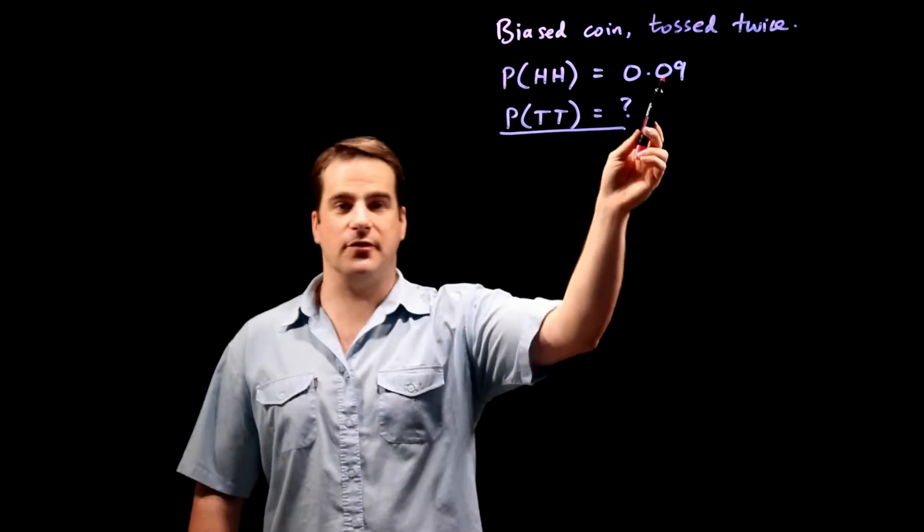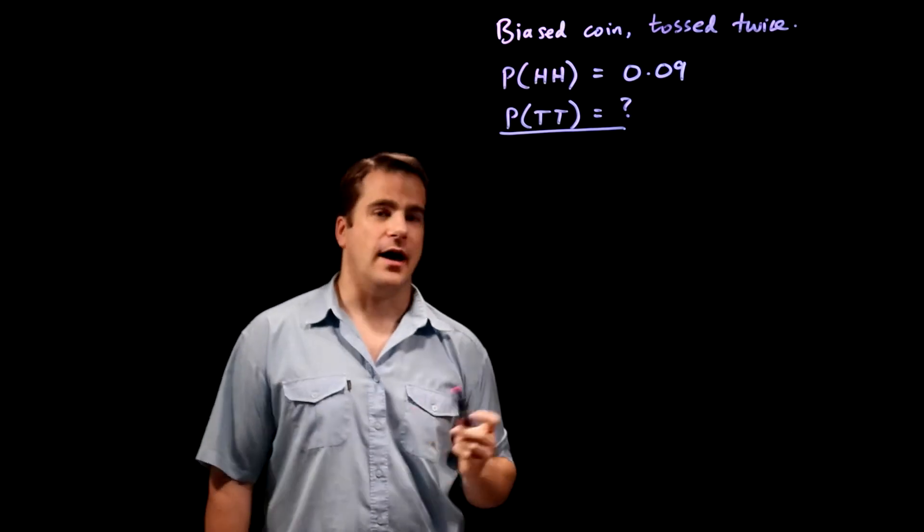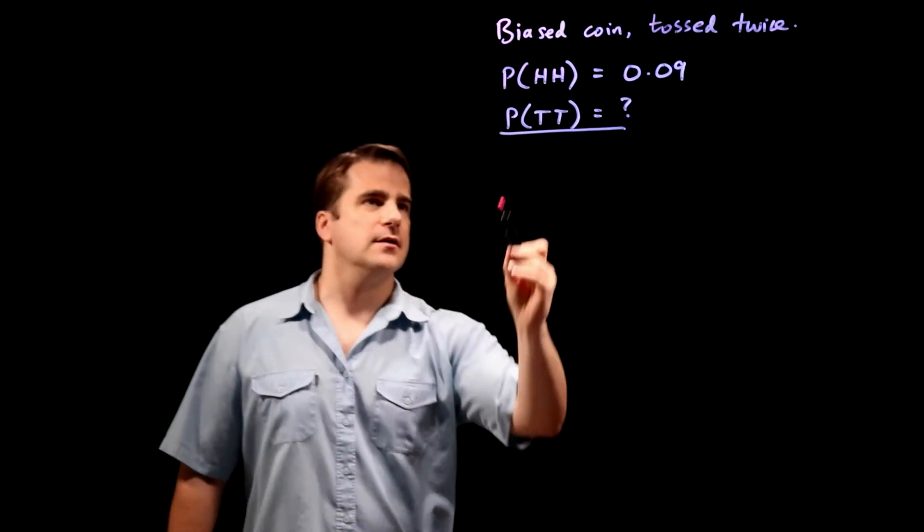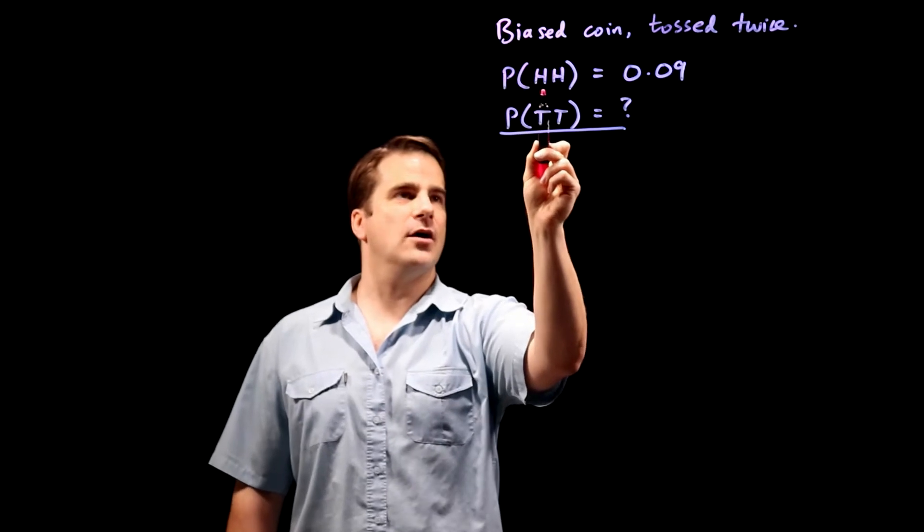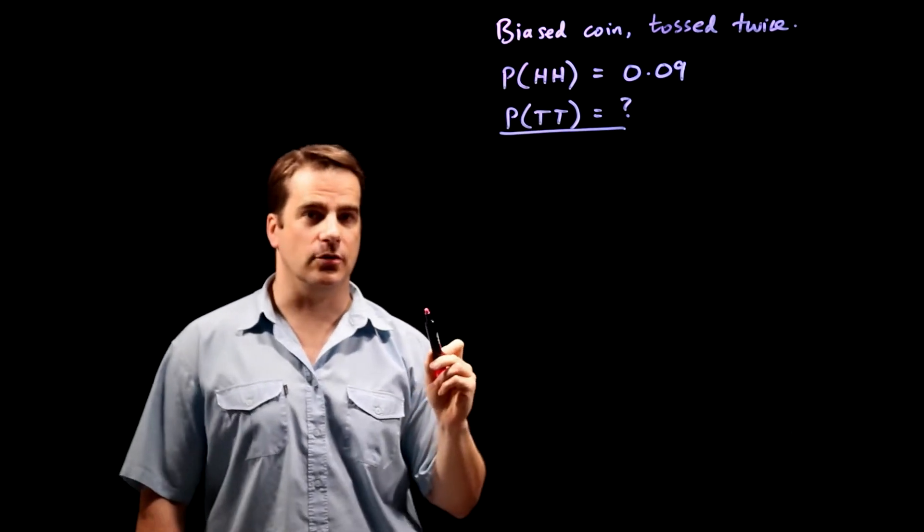Right, so that's all we've got to go on. How do we do it? Well, we're told that the probability of two heads is 0.09.